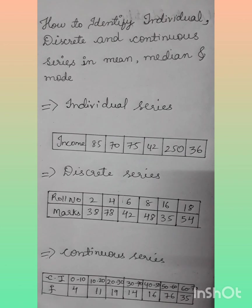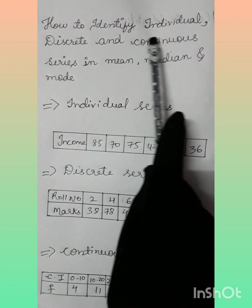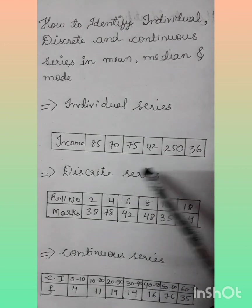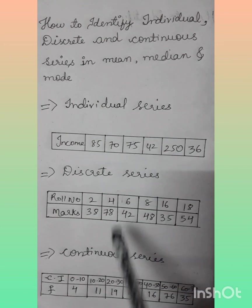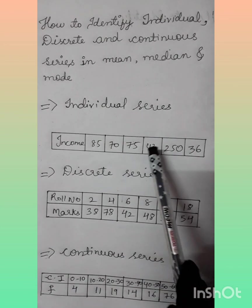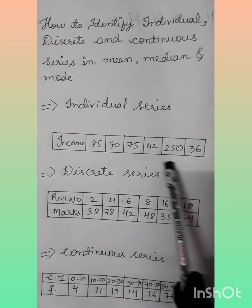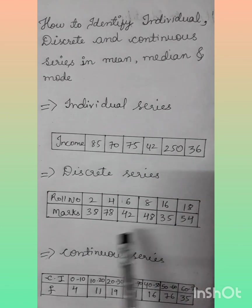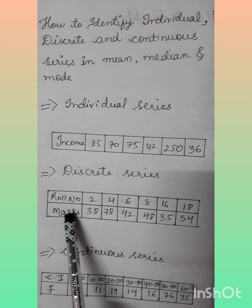So I hope you all understood how to identify individual, discrete, and continuous series. Individual: only one line. Discrete: two lines.